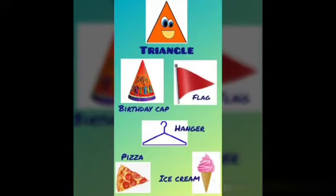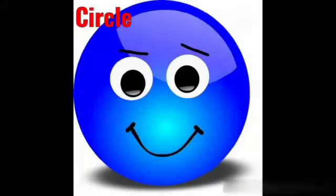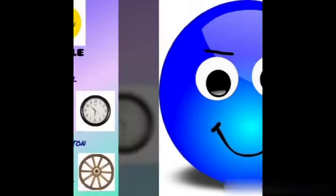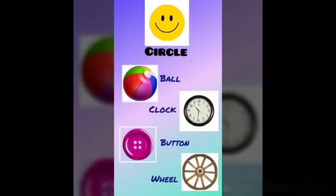Can you find more things of my shape? A ball, clock, button and wheel — all are round in shape. I know you will be able to find more objects around you of my shape.